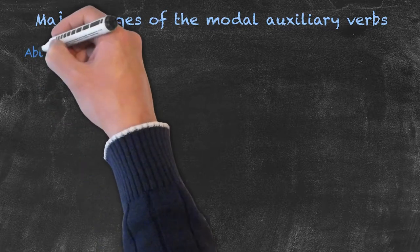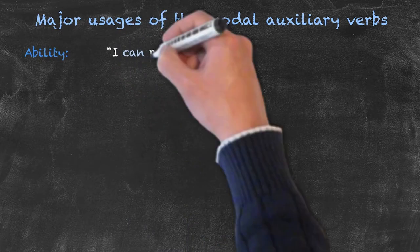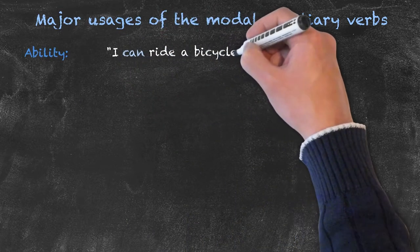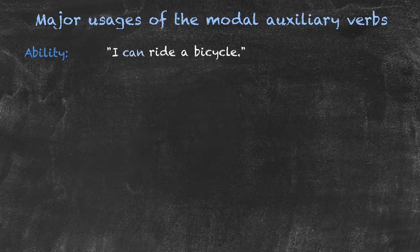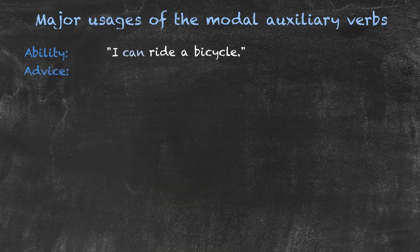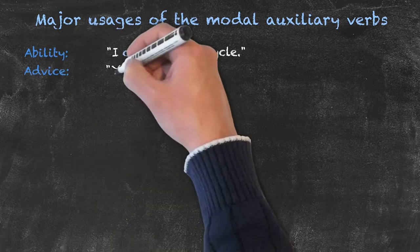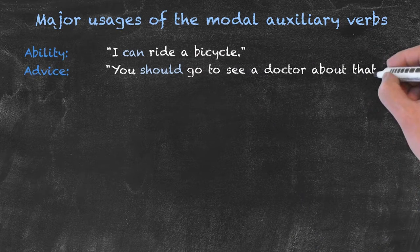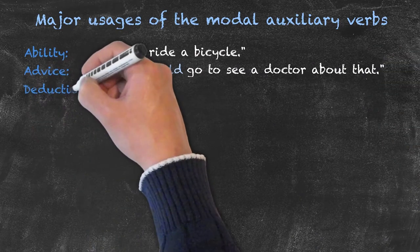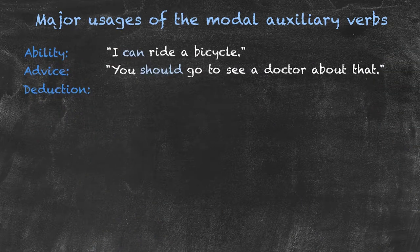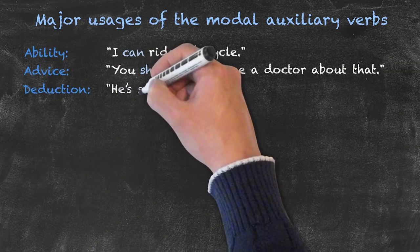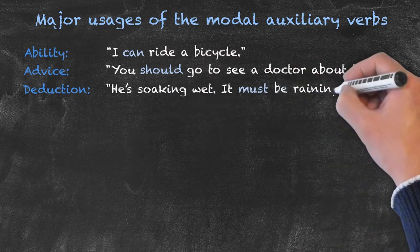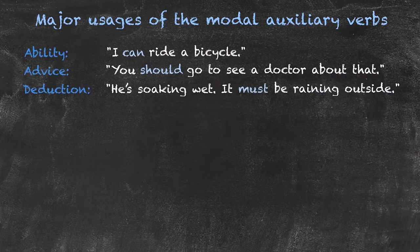Let's start with ability. For example, 'I can ride a bicycle,' expressing my ability to ride a bicycle. Next is advice — you might say to a friend who's ill, 'You should go to see a doctor about that.' Deduction: somebody comes in, they're soaking wet. 'It must be raining outside because he's drenched.' You're deducing that it's raining outside, but you don't actually know.